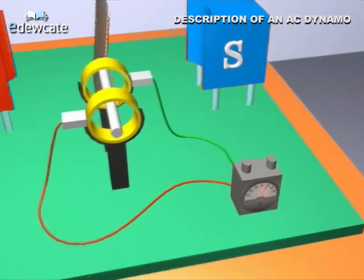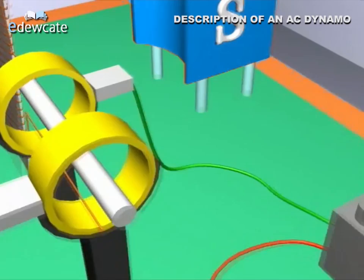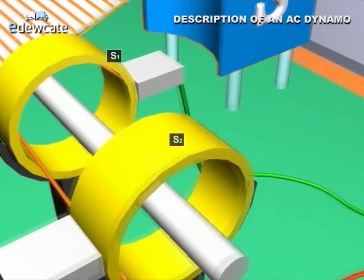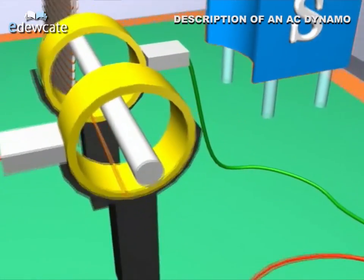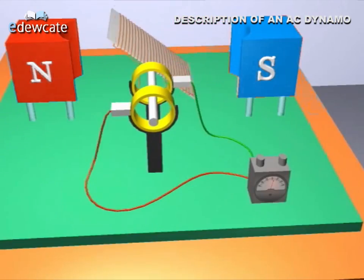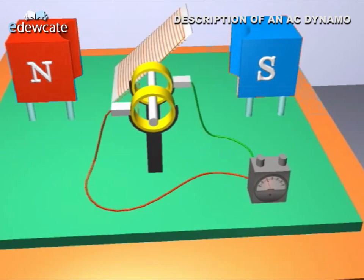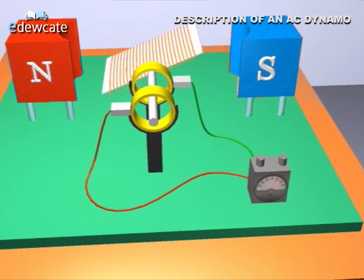The ends of the armature coil are connected to two different slip rings, S1 and S2 respectively. The rings are insulated from each other. These rings rotate along with the armature about the same axis as that of the coil.